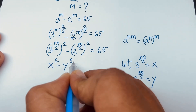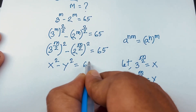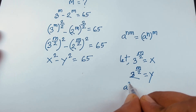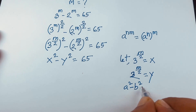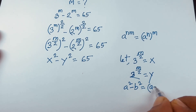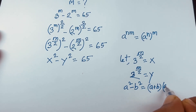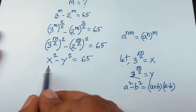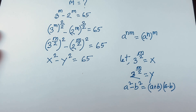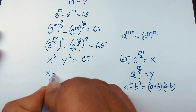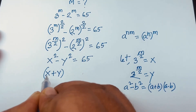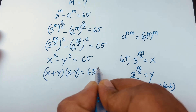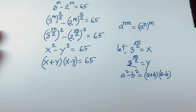So we have X² minus Y² is equal to 65. We know that a² minus b² equals (a + b)(a - b). According to this rule, X² minus Y² becomes (X + Y)(X - Y) is equal to 65.